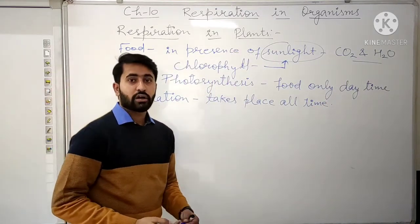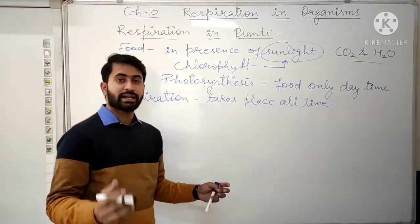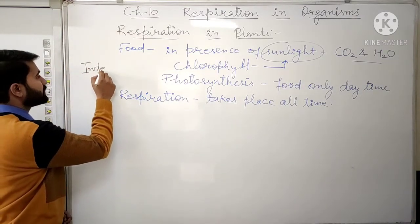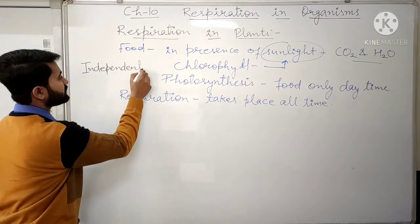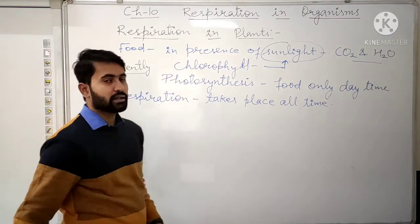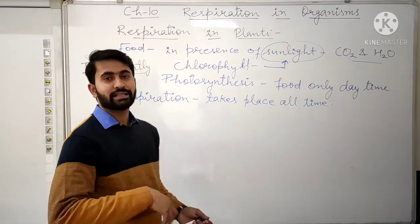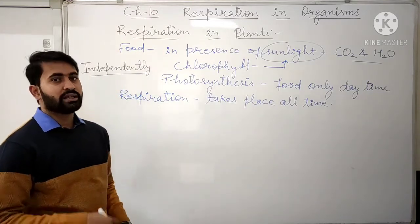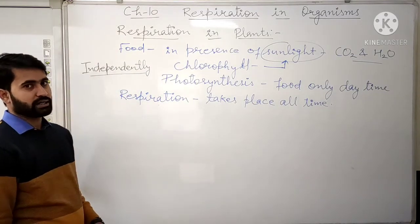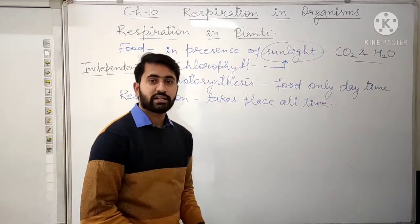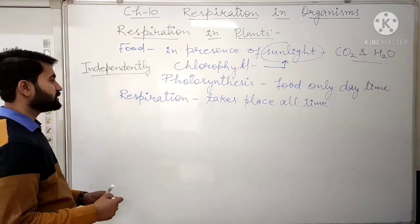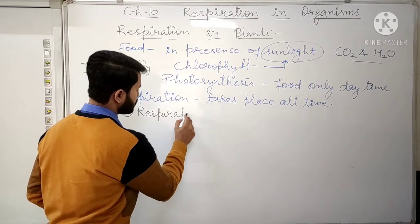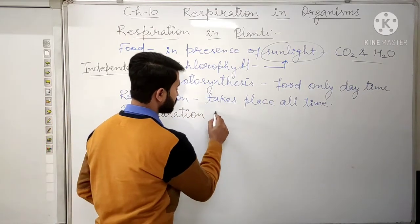In plants, all the body parts can respire independently. This means that all the body parts can take in oxygen on their own, carry out respiration, and then give out carbon dioxide. Respiration in plants takes place in two places: first, respiration in leaves, and second, respiration in roots.